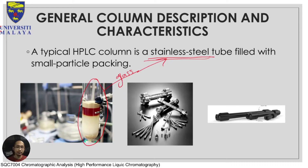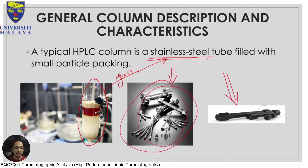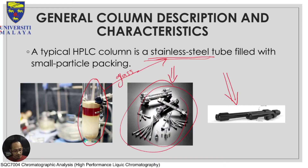Based on the influence of the Van Deemter equation and back pressure equations, some companies are now producing HPLC columns in more of a plastic — PTFE or PEEK material. The two most basic types of column are stainless steel and plastic tube. Column can be characterized based on four features: number one is the hardware itself — stainless steel or PEEK; number two is the modes.